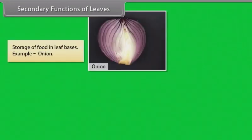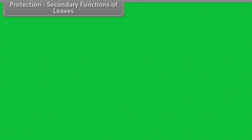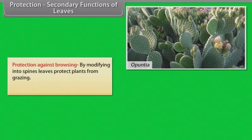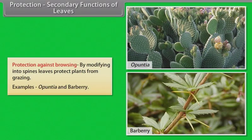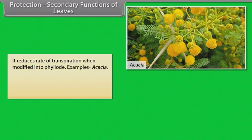Secondary functions of leaves. Storage of food in leaf bases — example: onion. Storage of water in the leaves of succulent plants — example: Bryophyllum, Aloe. Protection against browsing: by modifying into spines, leaves protect plants from grazing — examples: Opuntia and Berberis. Leaves also reduce the rate of transpiration when modified into phyllodes — example: Acacia.